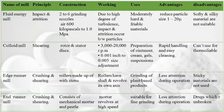Edge runner mill works on crushing and shearing; rollers are made of stone and rotate on their own axis; mainly used for grinding plant-based products; less attention required during operation; not used for sticky material. End runner mill also works on crushing and shearing; consists of a mechanical mortar and pestle where the mortar revolves at high speed; suitable for fine grinding; cannot be used for drugs that are unbroken.